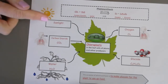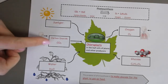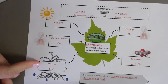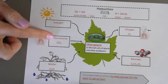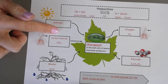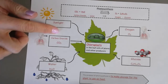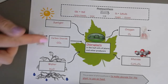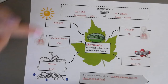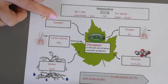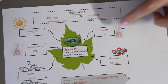Plants use the energy from sunlight to create a chemical reaction between carbon dioxide and water. Plants absorb water through their roots and take in carbon dioxide gas through their stomata — the tiny pores on plants that open and close to take in different gases. Using energy from sunlight, plants produce glucose and oxygen.